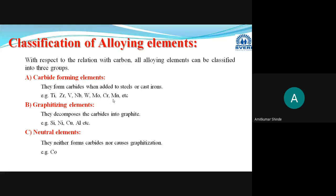The third type is neutral elements. When these elements are added to steel, they neither form carbides nor cause graphitization. There is only one neutral element — cobalt. It has no effect related to carbon: it neither forms carbides nor causes graphitization. Cobalt is the only element that is neutral with relation to carbon.